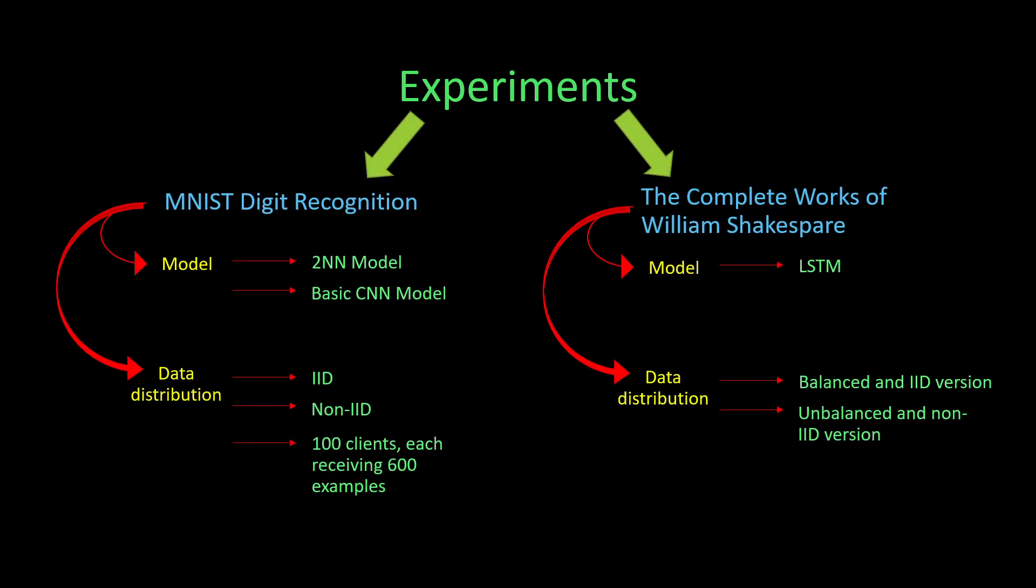We'll be examining IID EMNIST dataset and CNN setup. The architecture is a basic CNN model consisting of two convolution layers followed with max pooling, a fully connected layer, and a softmax layer. The dataset is IID, meaning it is shuffled before being distributed to clients.